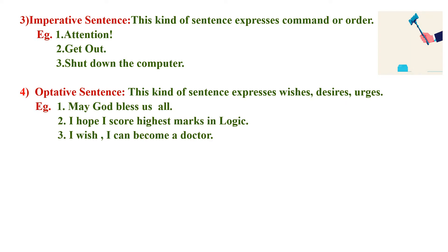The fourth is the optative sentence. This kind of sentence expresses wishes, desires, and urges. For example: 'May God bless us all,' 'I hope I score the highest marks in logic,' and 'I wish I can become a doctor.' So she is expressing her wishes, urges, or desires. This type of sentence is an optative sentence.